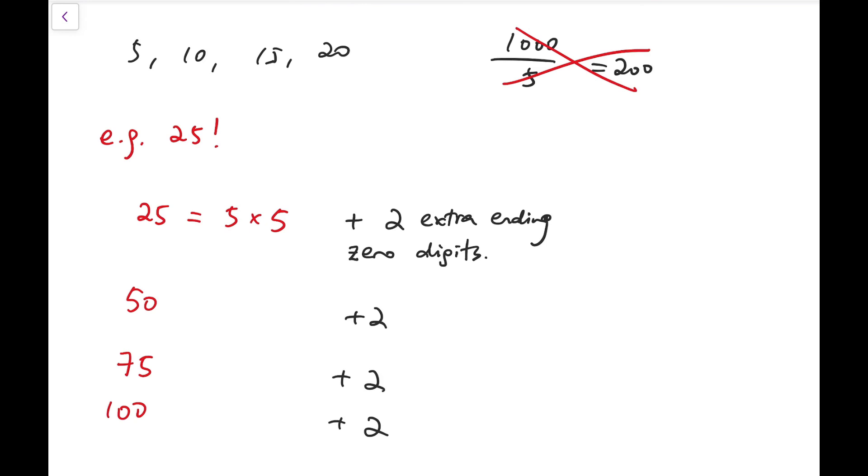So that means when we multiply numbers up to multiples of 25, then we will get extra ending zero digits. So maybe this is a bit confusing, just adding 2 ending zero digits. So altogether 2, not 1 plus 2 equals 3.